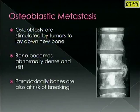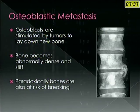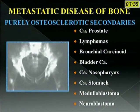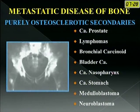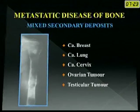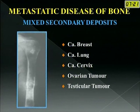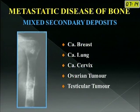In osteoblastic metastasis, the bone is abnormally dense and stiff but also very fragile, carrying a very high risk of pathological fractures. Common osteoblastic secondaries include prostate, lymphomas, bronchial carcinoid, bladder cancer, nasopharynx, stomach, medulloblastoma and neuroblastoma. Very often you see mixed secondaries — both osteolytic and osteoblastic lesions — which are very common in breast, lung, cervix, ovarian and testicular tumors.